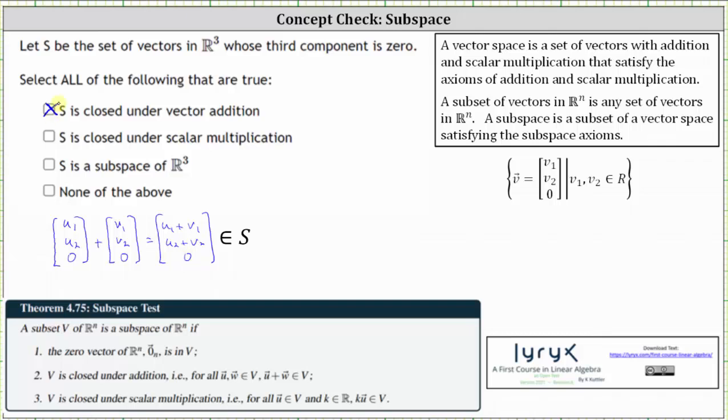Next, we need to check to see if S is closed under scalar multiplication, where the scalar can be any real number. Let's let the scalar be A. Let's check that A times any vector in S, which will have the form U sub one, U sub two, zero, is also in S.